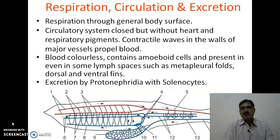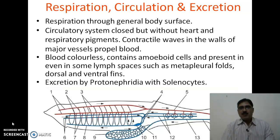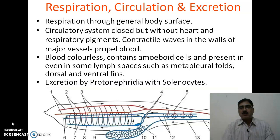As far as respiration, circulation, and excretion are concerned in cephalochodates: there is no specialized respiratory organ, and respiration takes place only through the general body surface. The circulatory system is simple and closed type, but surprisingly it is without a heart and without respiratory pigments. The flow of circulation is maintained by contractile walls present in major blood vessels — contractile waves in these vessel walls propel the blood and maintain circulation.